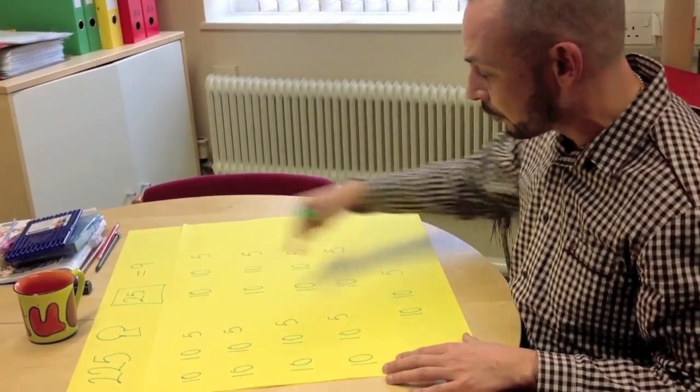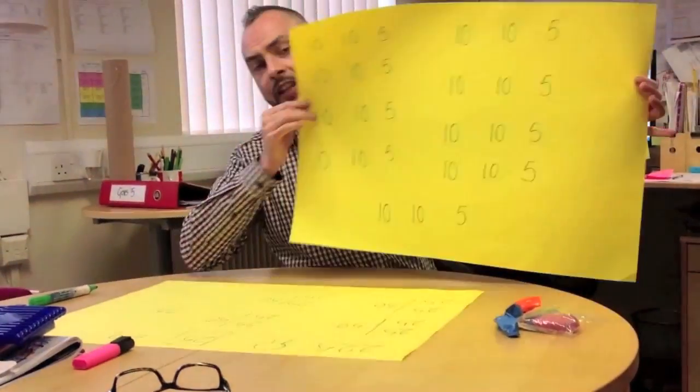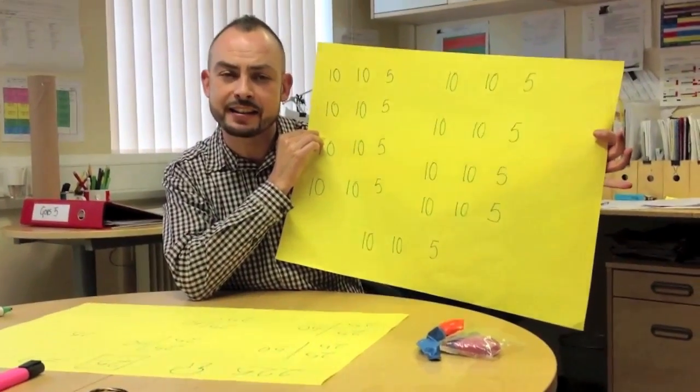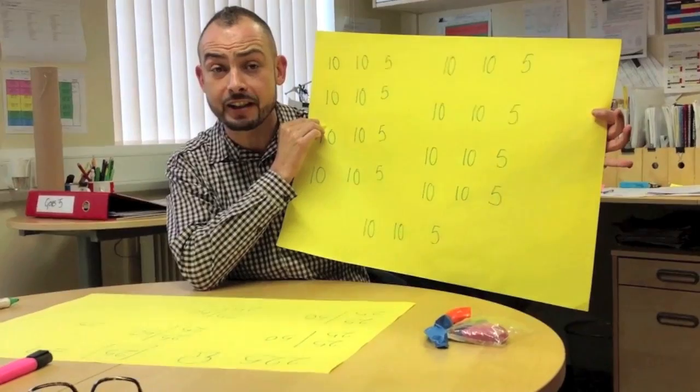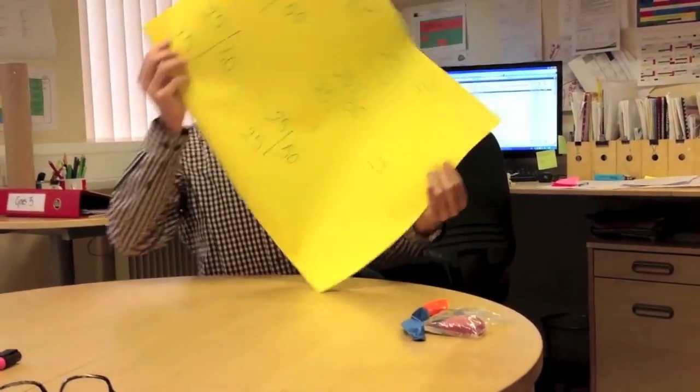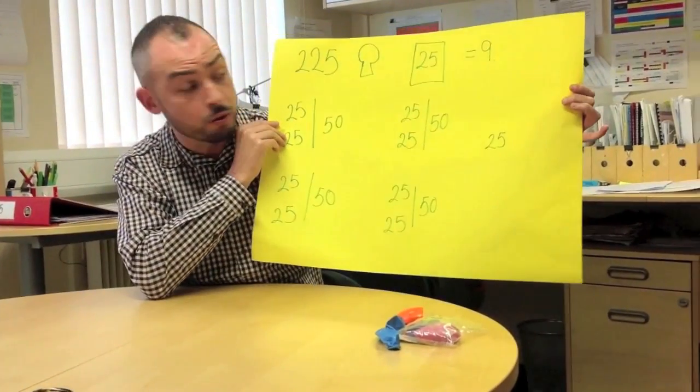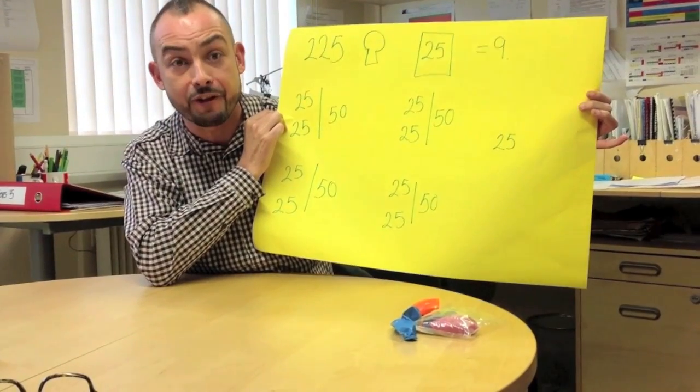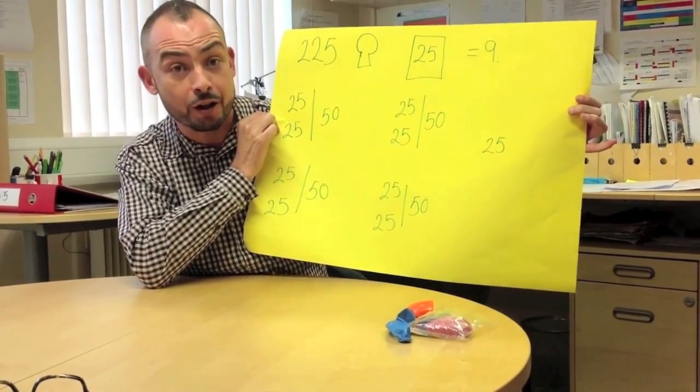So I showed you two ways there. There's this way which is really about children experimenting with ways to make 25 and keeping a running total until they get up to 225. And the other way, which is more advanced and which is where we're trying to get our children to, is for them to have a notion of 25 and how that links to 50 and how that links to 100 and then to 225.